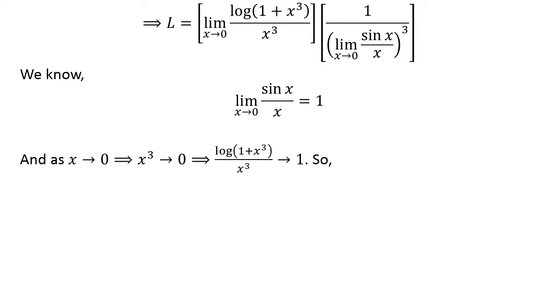We know as x approaches 0 implies cube of x approaches 0. So, limit of natural log of 1 plus cube of x upon cube of x is equal to 1. The video appearing in the upper right corner explains this identity. The link is also mentioned in the description section.